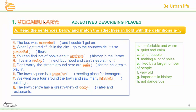Now, vocabulary — adjectives describing places. Read the sentences below and match the adjective in bold with the definition from A to H. Look at these words and match them with the phrases or definitions. The words are: crowded, peaceful, ancient, noisy, safe, popular, historic, and cozy.